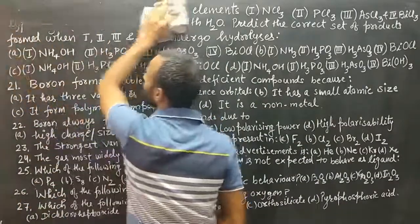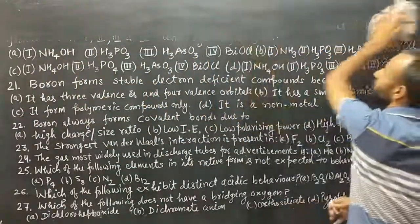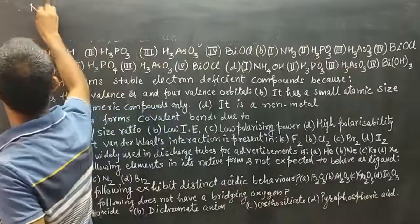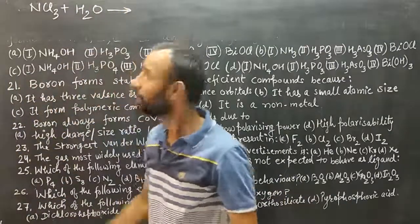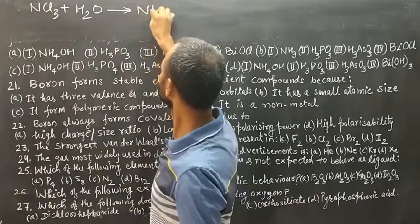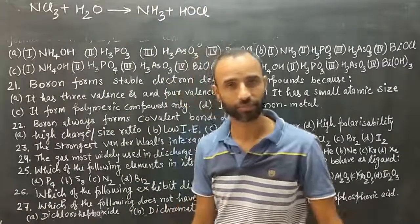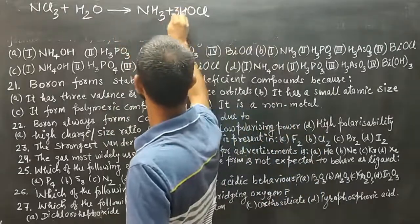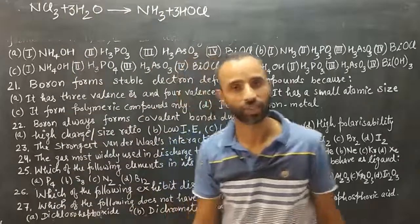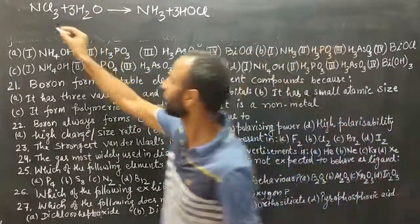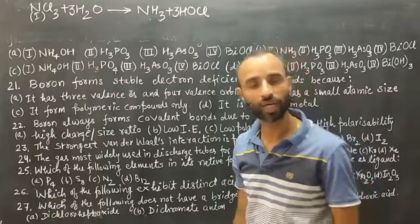In the case of NCl3, when hydrolyzed, the product formed is NH3 along with hypochlorous acid (HOCl). Three chlorines give three HOCl molecules, and we get NH3. So in case of NCl3, the product formed is ammonia along with hypochlorous acid.